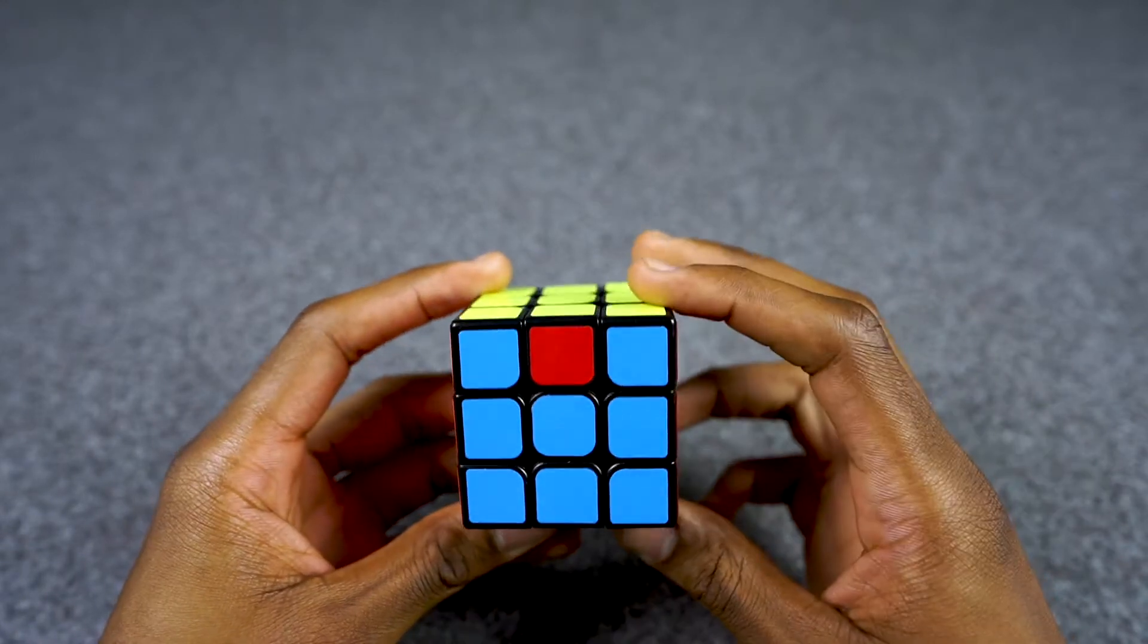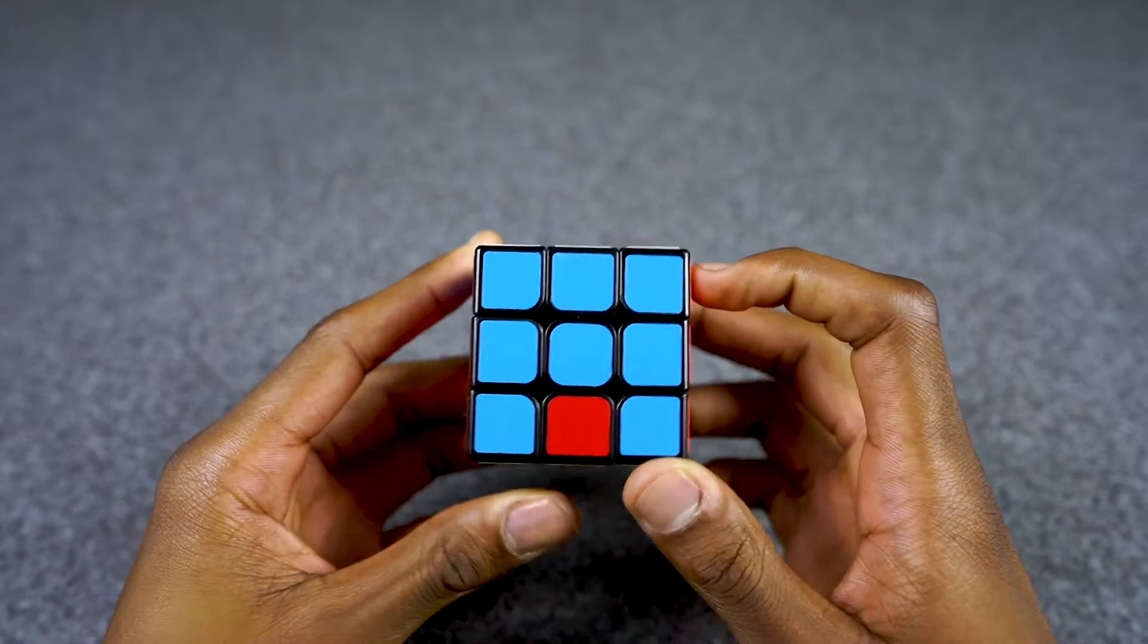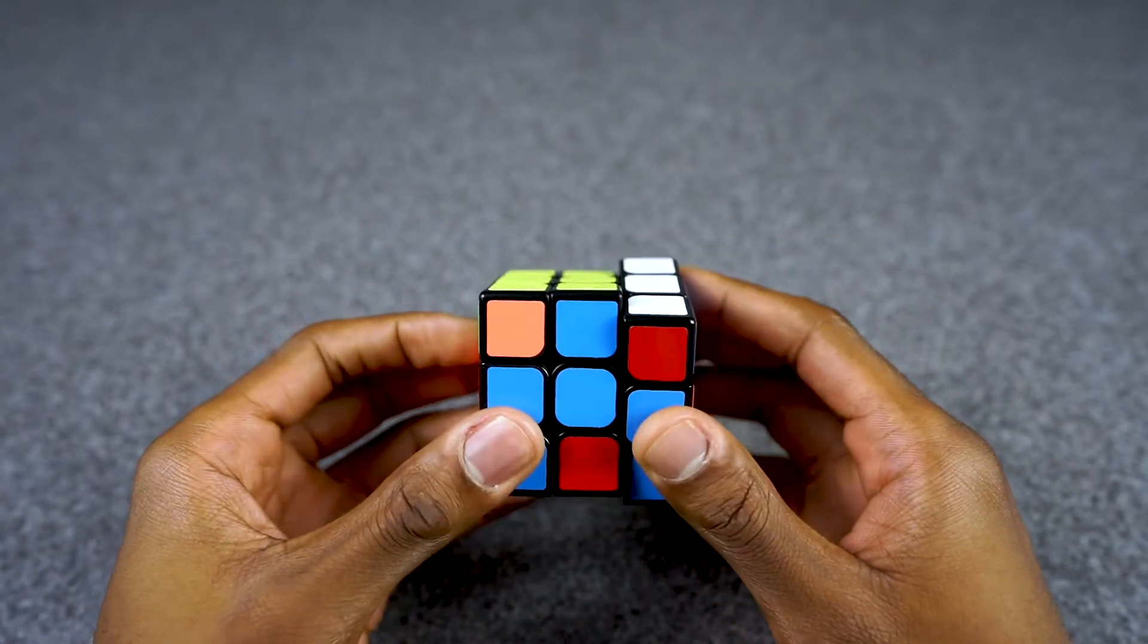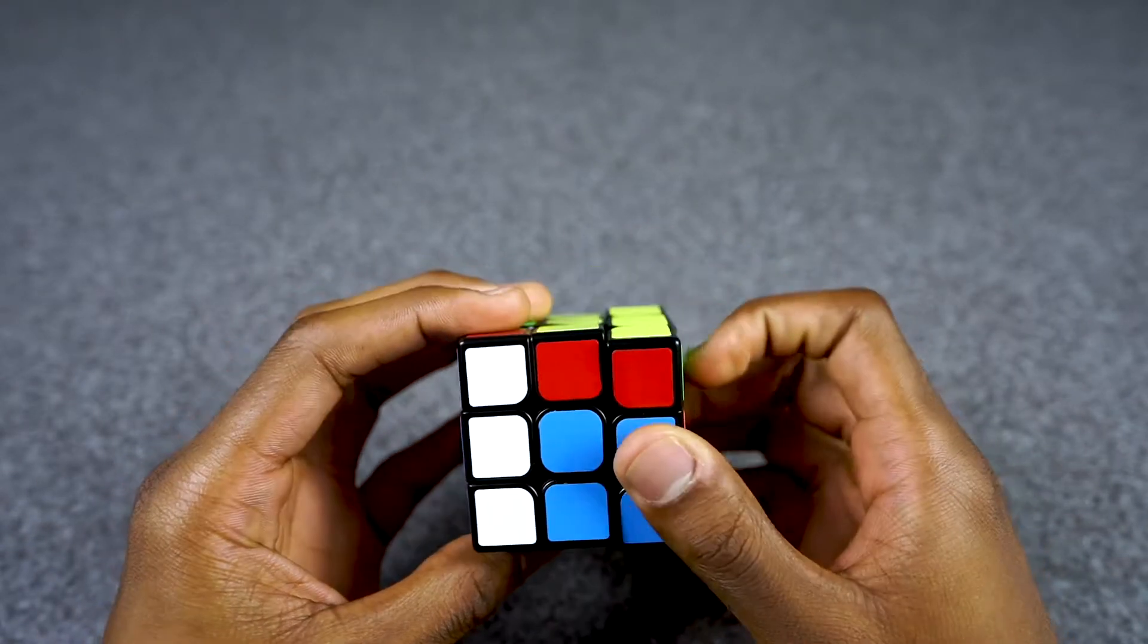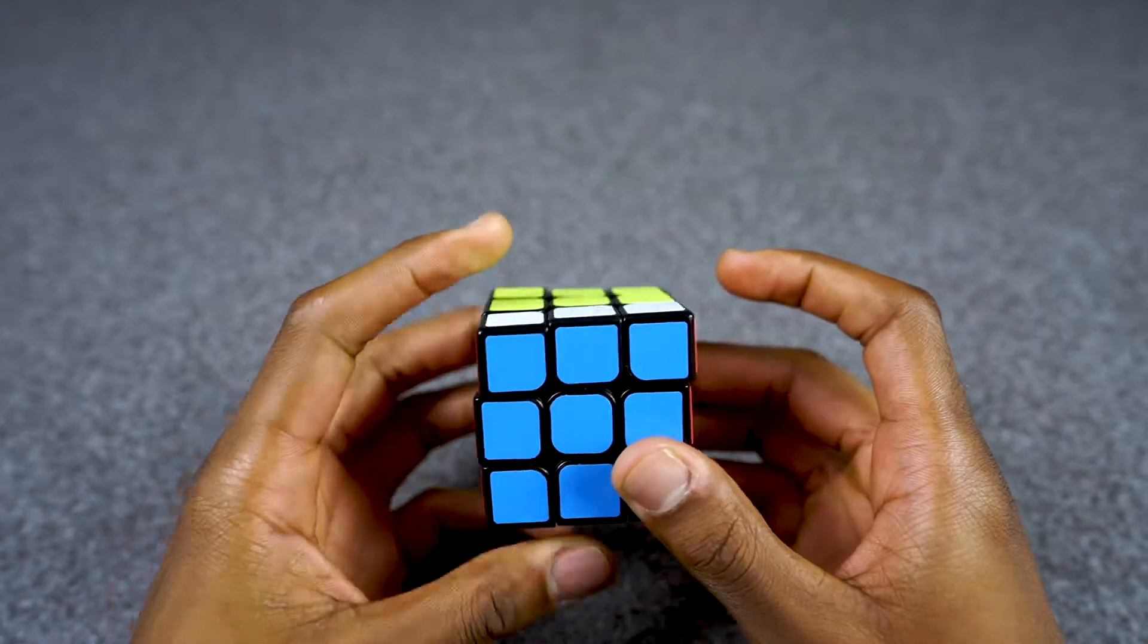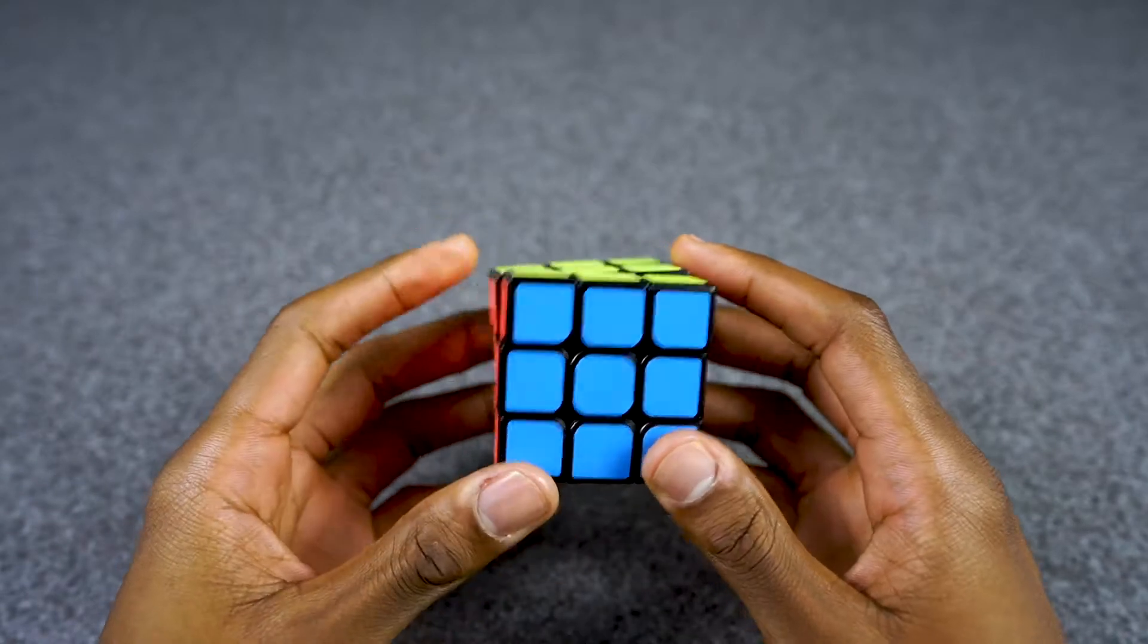I would do the algorithm one more time, which is F2. In this case this blue has to go here: R prime, L, F2, R, L prime, U prime, F2.